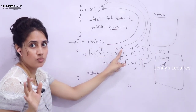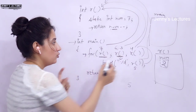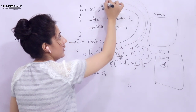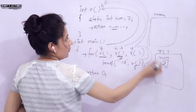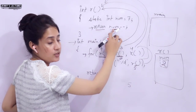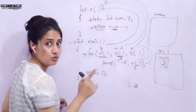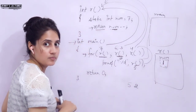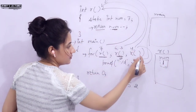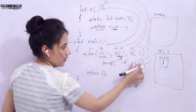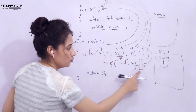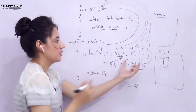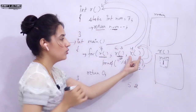Condition is true, so we enter the loop. printf %d calls function r again — num holds its previous value of 2, so the original value 2 is returned and printed. Then num becomes 1 after the post-decrement. So 2 is printed this iteration.